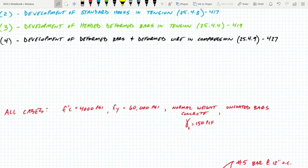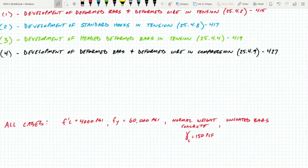For all cases, we're going to be assuming F'C of 4,000 PSI, pretty standard concrete. For our reinforcing bar, we're going to be assuming an FY of 60,000 PSI. We're going to be using normal weight concrete with a density of 150 pounds per cubic foot. And for all reinforcing, we are going to be using uncoated bars today.